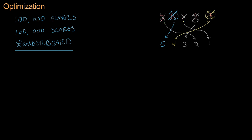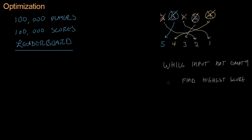This is a simple algorithm. Let me write out the steps quickly in pseudocode: while the input is not empty, find the highest score, add it to the output, and remove it from the input.